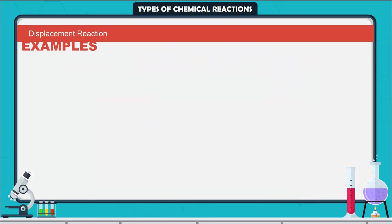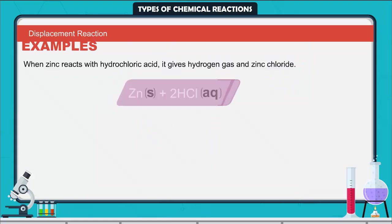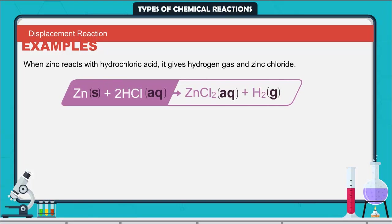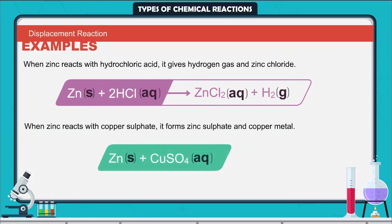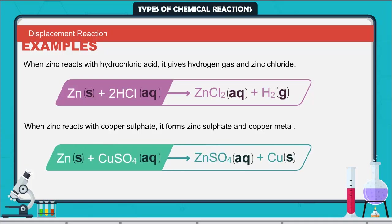Some more examples: When zinc reacts with hydrochloric acid, it gives hydrogen gas and zinc chloride. When zinc reacts with copper sulfate, it forms zinc sulfate and copper metal.